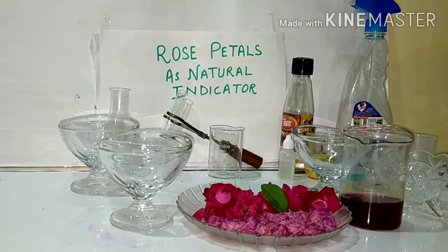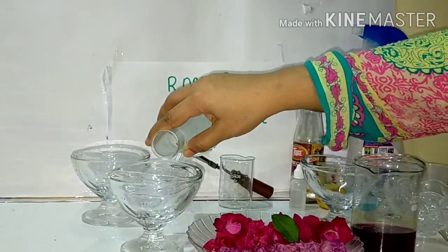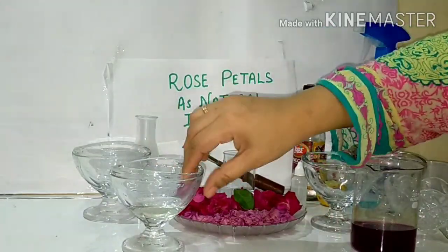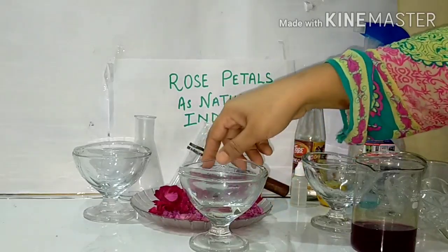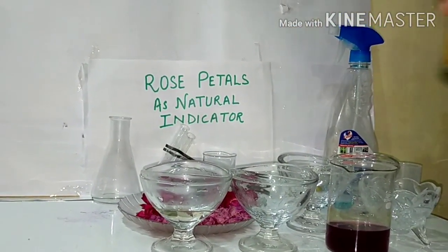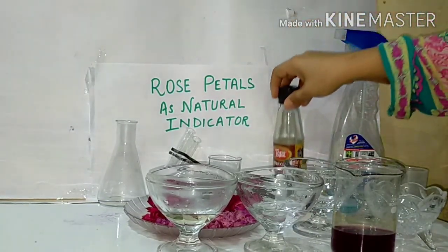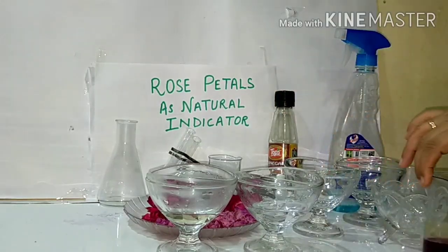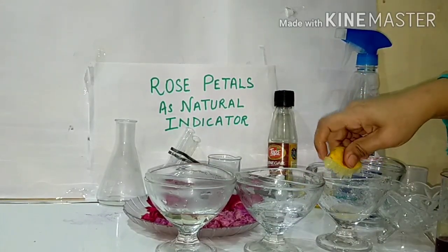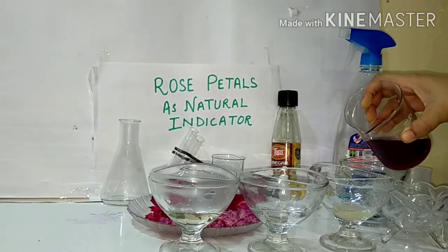I will add rose petal juice in each bowl and observe the color. I have taken hydrochloric acid in this bowl, and I will add vinegar into another bowl. Then in another bowl I have squeezed lemon juice — you know lemon contains citric acid.